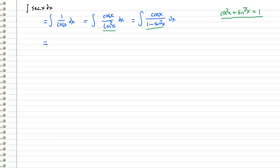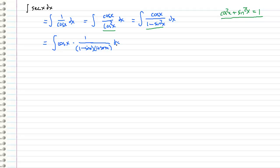So we can just continue playing around with what we have right here, and with a little bit of luck we can arrive at the following. I'm going to factor out a cosine x right there, and I recognize that this denominator is actually a difference of squares — 1 squared is 1, and sine squared is sine squared. So I get 1 minus sine x times 1 plus sine x, and of course we can't forget our dx right there.